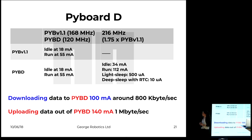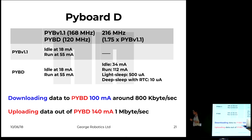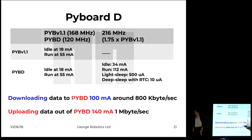The new board's power consumption ranges from 34 milliamps up to 112 milliamps when running. Light sleep is 500 microamps, and deep sleep with the real-time clock enabled is 10 milliamps. Downloading data to the Pyboard D is around 800 kilobytes per second at about 100 milliamps, and upload is 1 megabyte per second at about 140 milliamps.